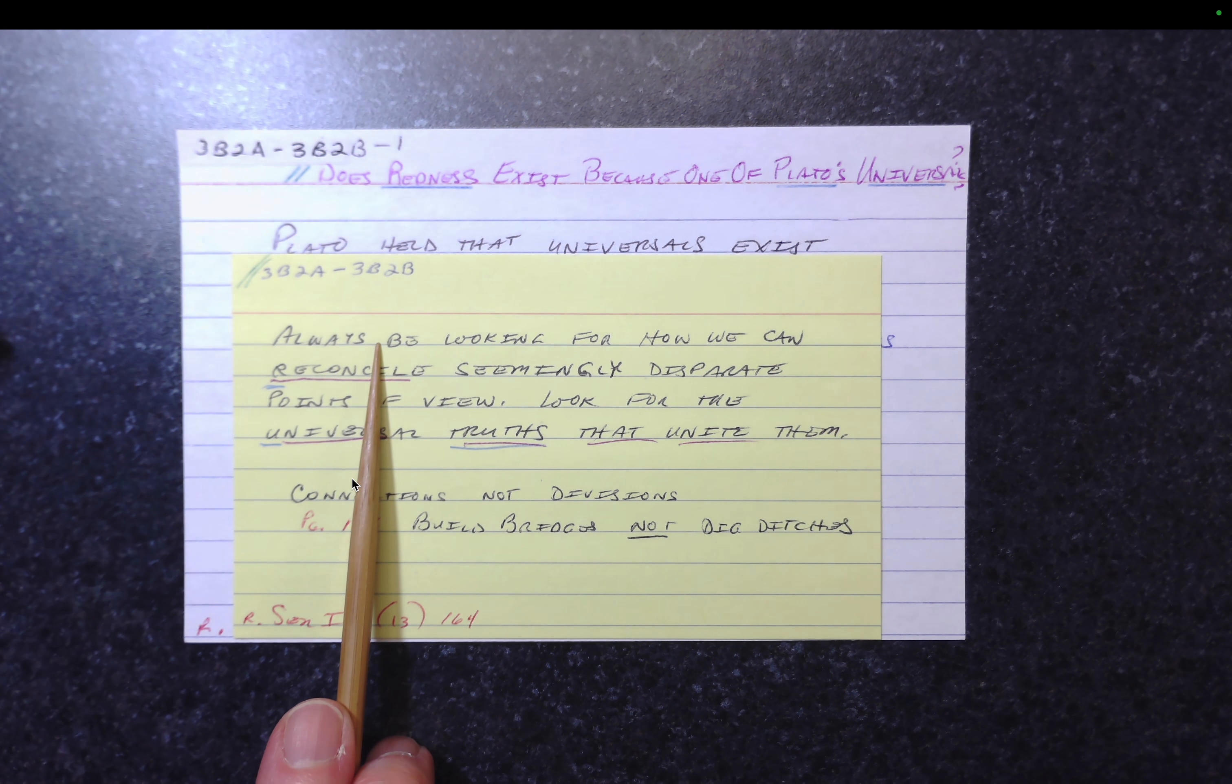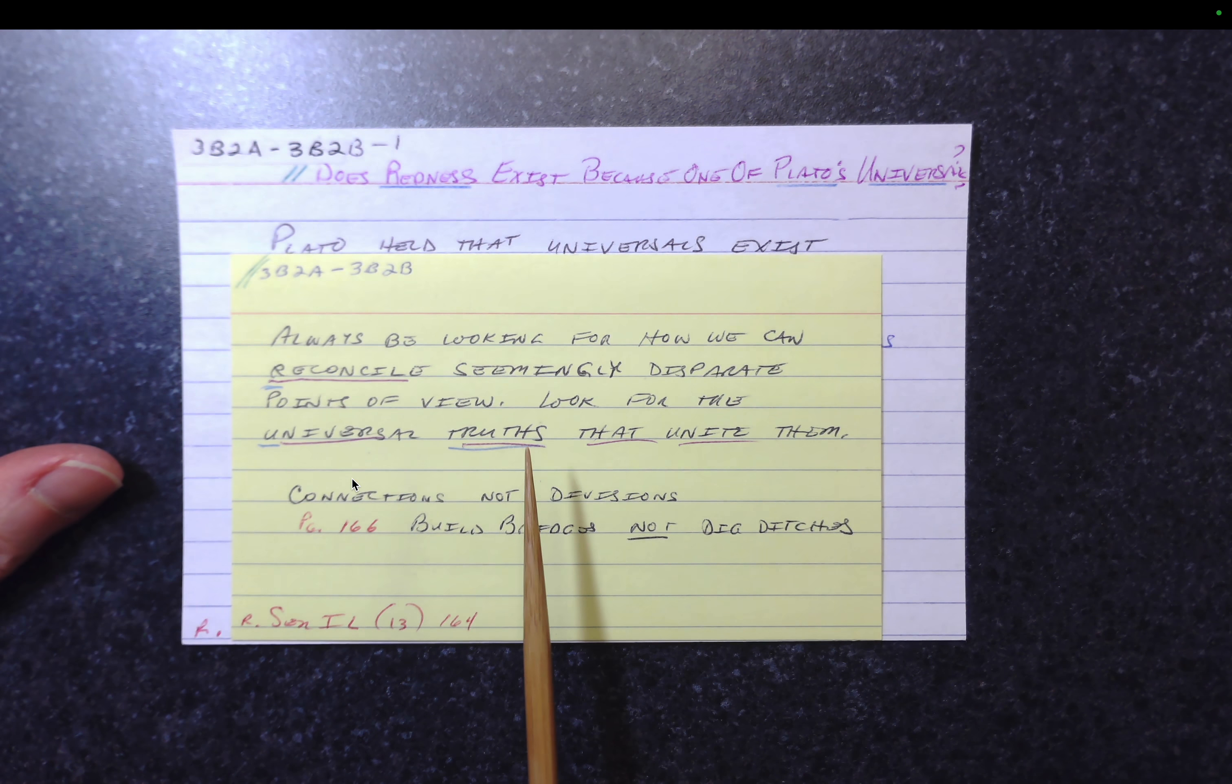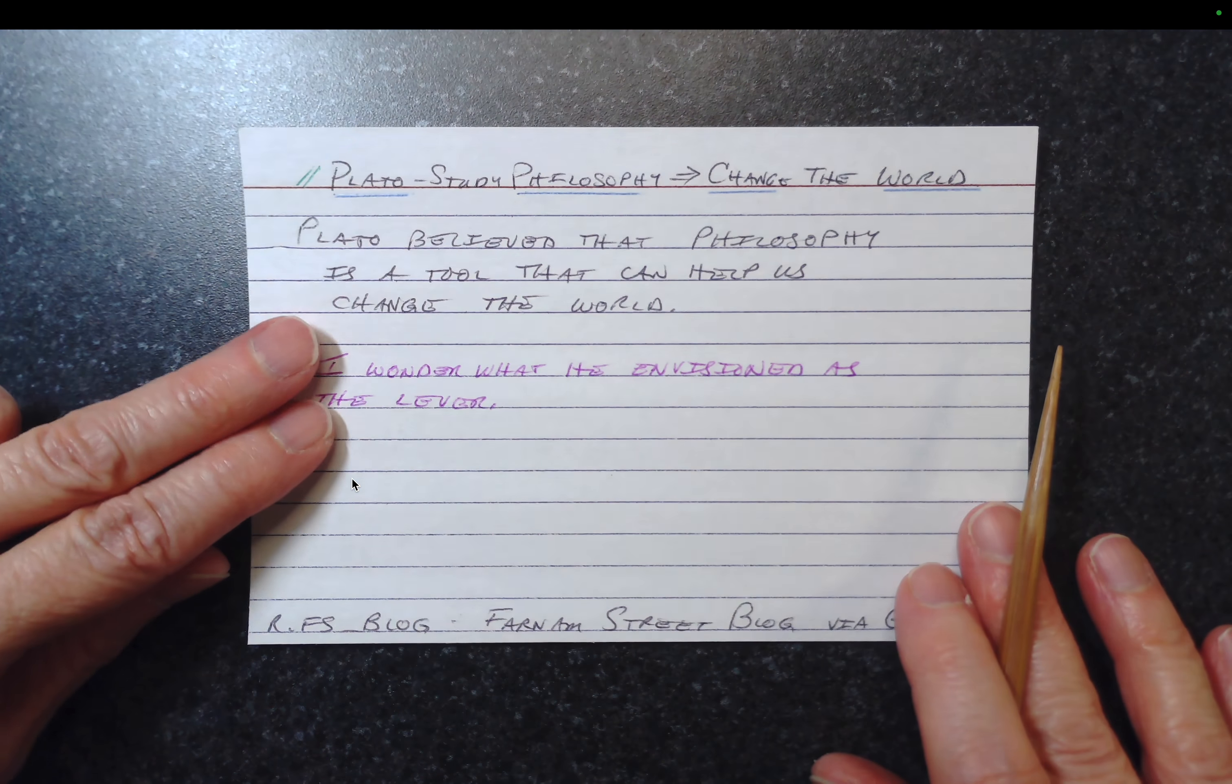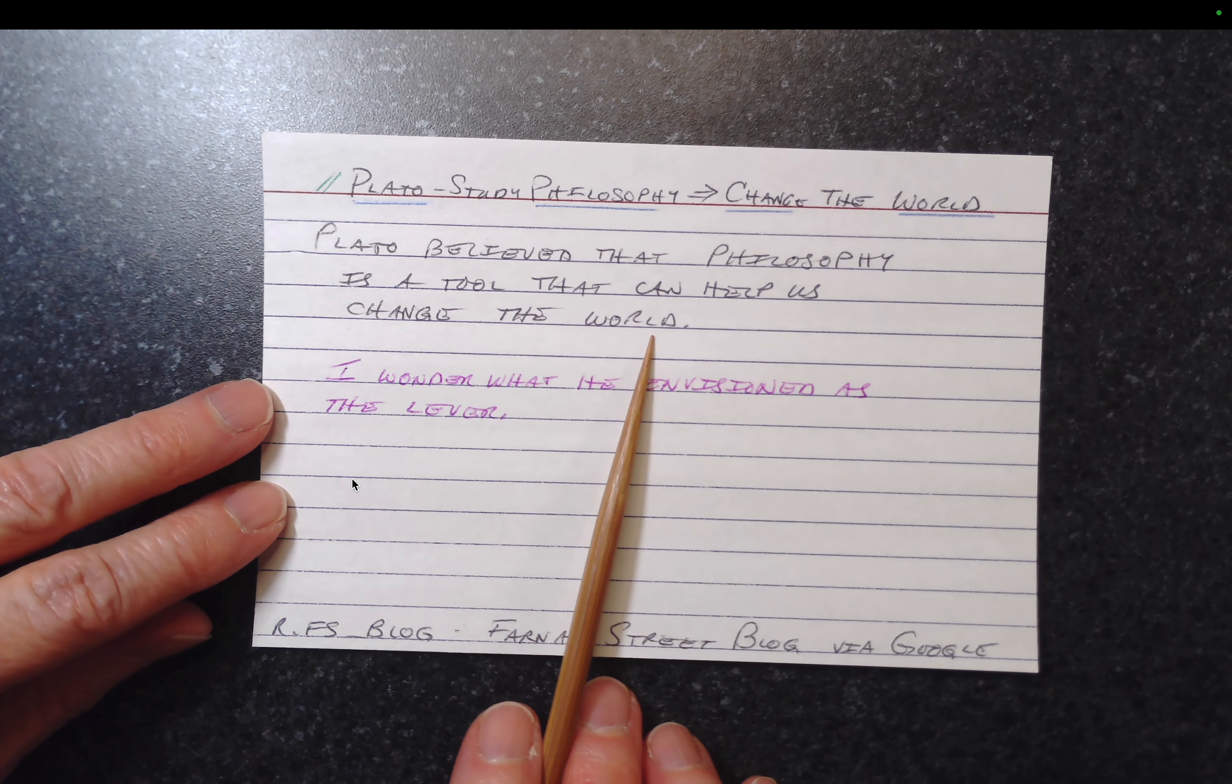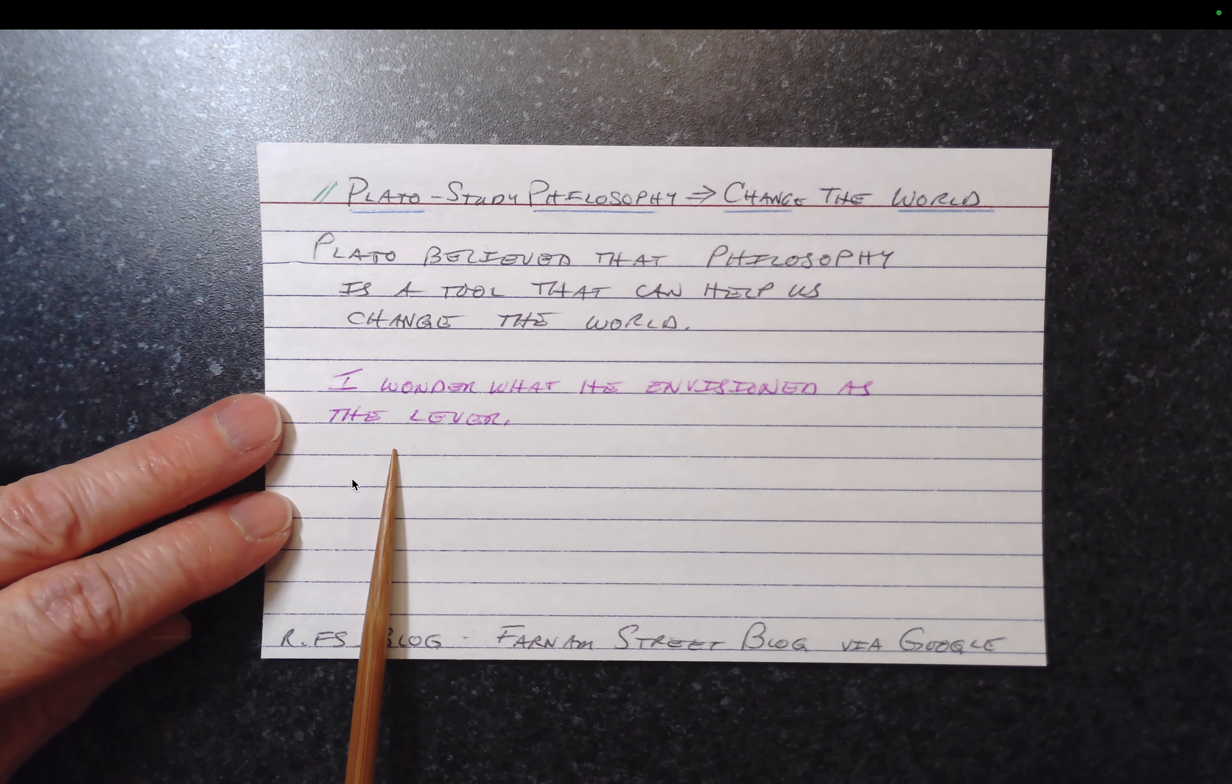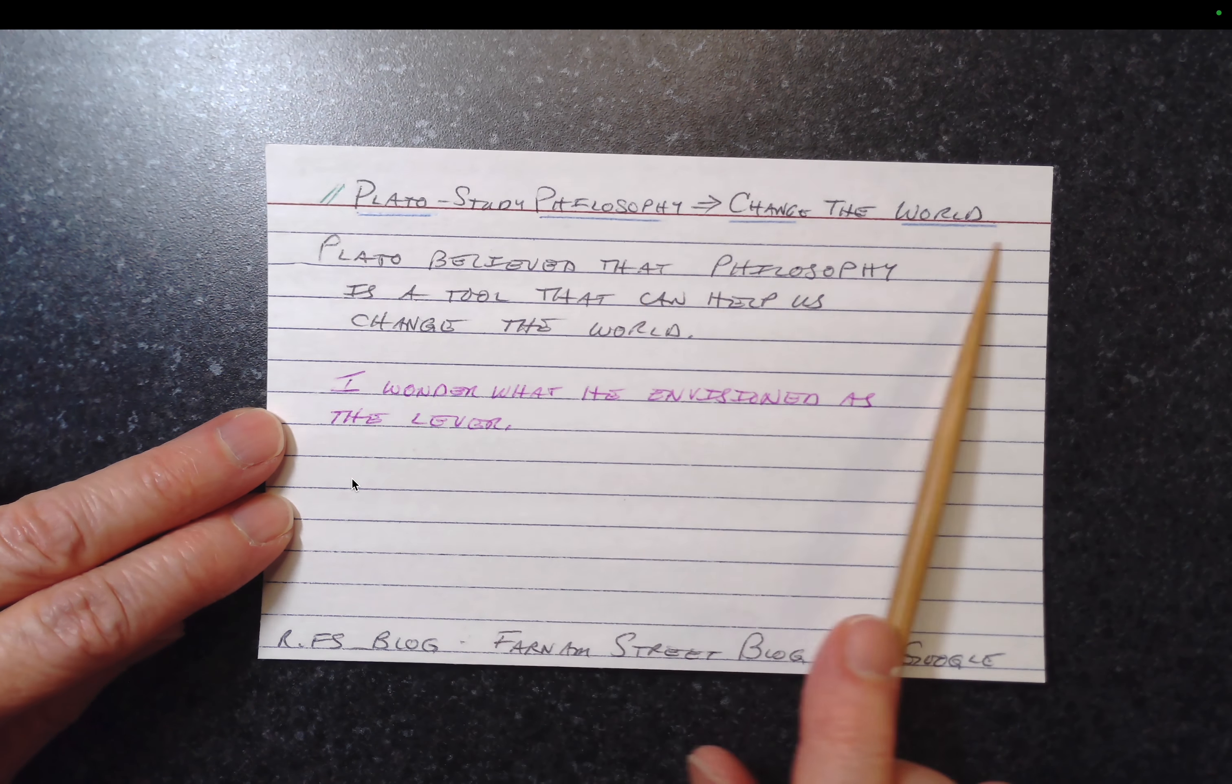So now I wanted to show an example of what the reader was worried about. What happens then when a new card comes in that is that more general card? Well, I didn't happen to have one, but Google is so helpful in that regard. So I had no trouble constructing one. And this came out of a Google search, which delivered up a Farnam Street blog. The information I got from that blog was that Plato believed that philosophy is a tool that can help us change the world. And my rumination on that was, I wonder what he envisioned as the lever. And then my tagline is Plato, study philosophy, change the world. Okay, so this doesn't have a card number yet.